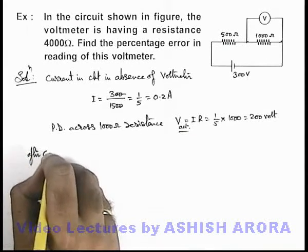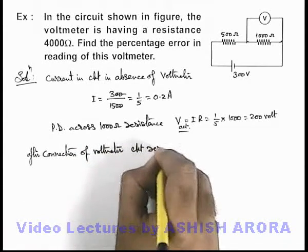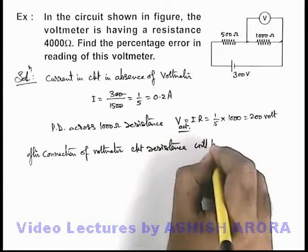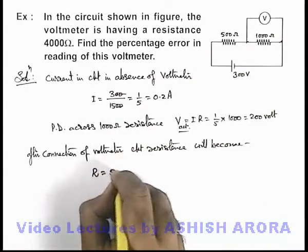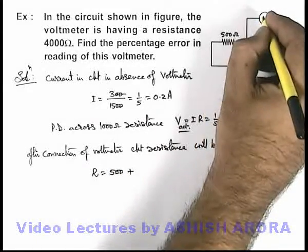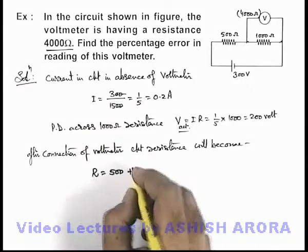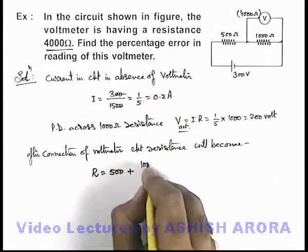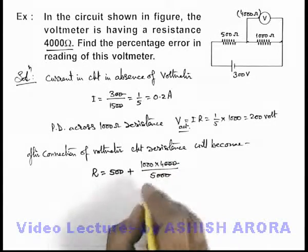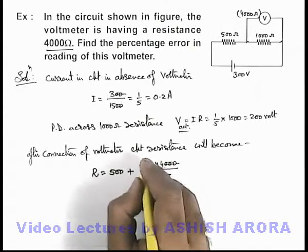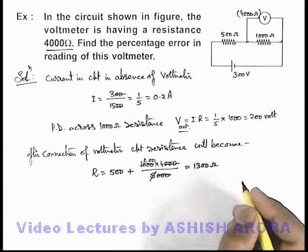Now, after connection of the voltmeter, the circuit resistance changes. The voltmeter of 4000 ohms is now in parallel with the 1000 ohm resistance. Their equivalent resistance is (1000 × 4000) / (1000 + 4000) = 4,000,000 / 5000 = 800 ohms. This 800 ohm combination is in series with the 500 ohm resistance, giving a total circuit resistance of 1300 ohms.